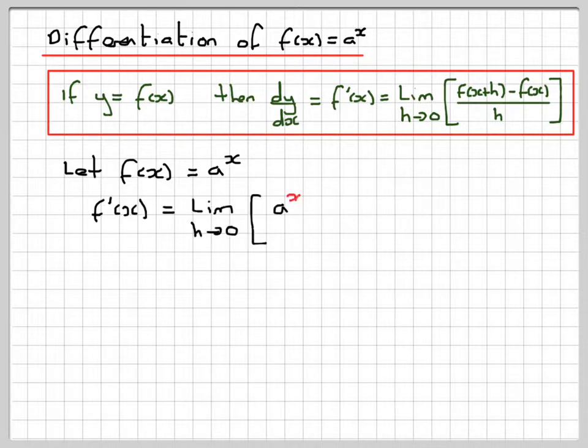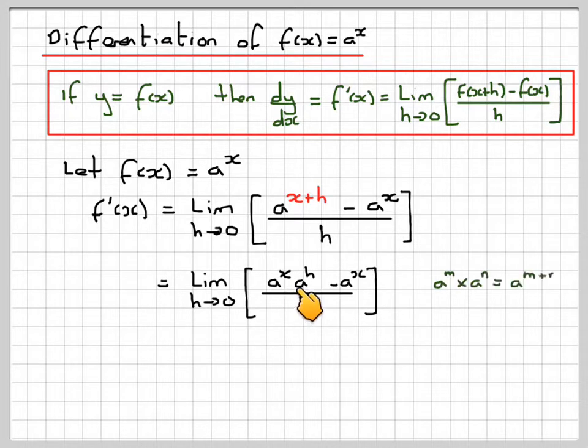Then if we did f dash of x using this formula, we're going to have a to the x plus h minus a to the x divided by h. Now using one of the rules of indices, this will become limit as a to the x times a to the h minus a to the x over h, because we have this rule a to the m times a to the n is equal to a to the m plus n.